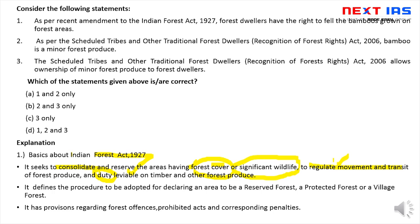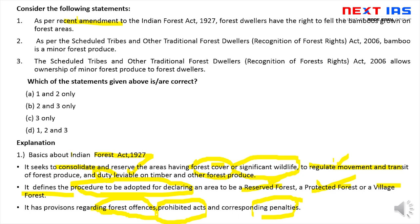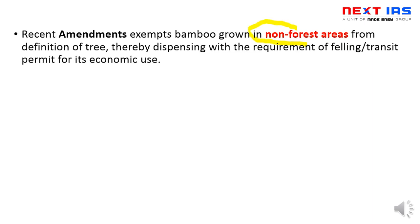Indian Forest Act 1927 में reserved forest, protected forest, और village forest को declare करने का तरीका बताया गया है। Comment box में बताएं: reserved forest और protected forest में क्या difference है। इसमें forest offenses का भी provision है — कौन-सी activities allowed नहीं हैं और उनकी penalties क्या हैं। Recent amendments में bamboo को tree की category से exclude कर दिया गया था — but वो non-forest area के लिए था। Statement one forest area के लिए की गई है — so statement one is wrong.